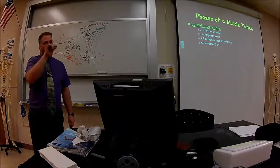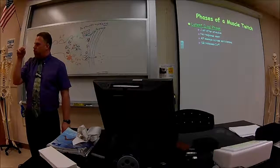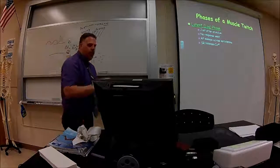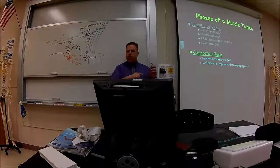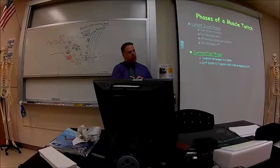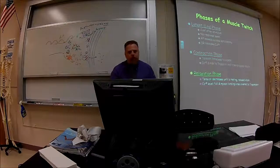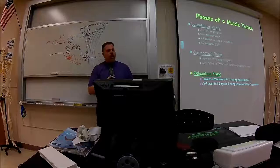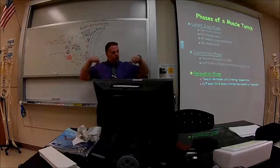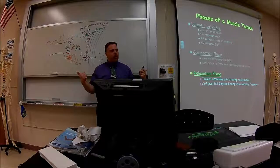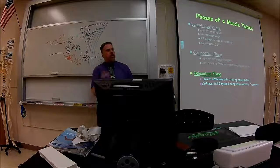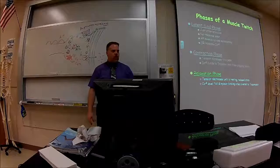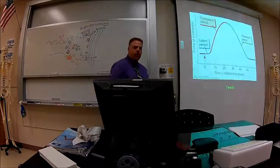The calcium gets released but hasn't yet bound to troponin. The contraction phase is when calcium binds to troponin, moving it aside, allowing cross-bridging to occur and producing contraction. Then comes the relaxation phase — calcium levels fall, calcium goes back into the sarcoplasmic reticulum, tropomyosin recovers the myosin binding sites, and myosin can no longer bind to actin, causing relaxation.